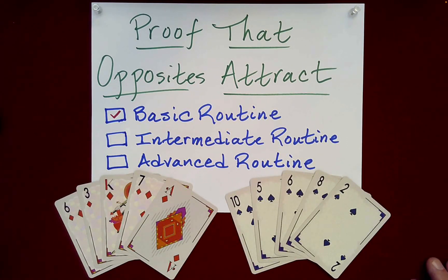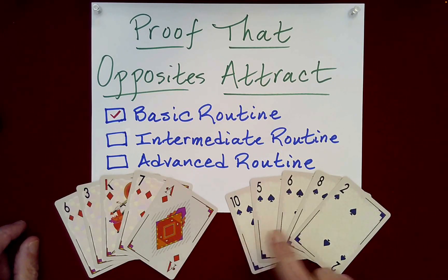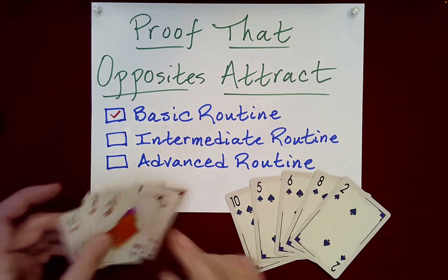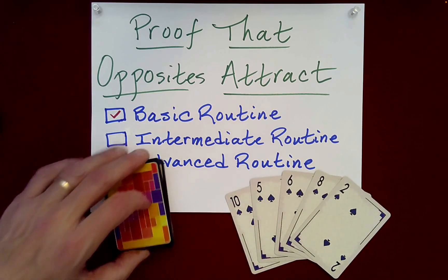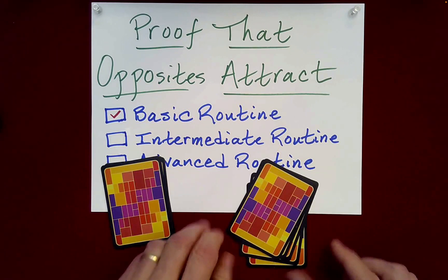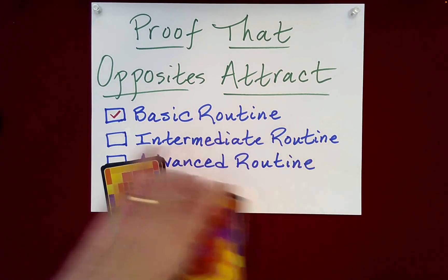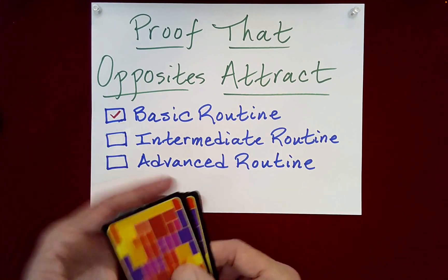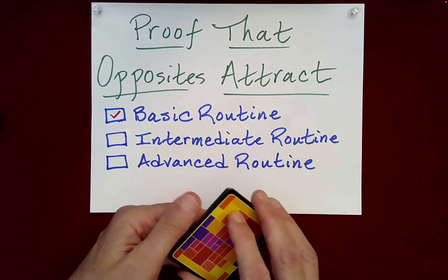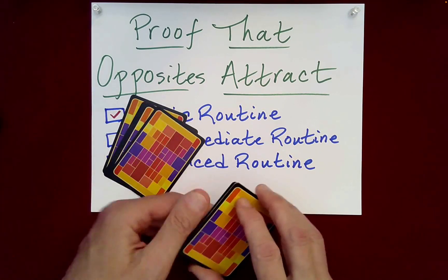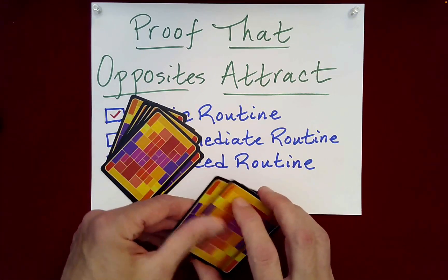For the basic routine, you can begin with any number of red cards and any number of black cards. It's important that you have the same number of each. We just kind of set these down and have the spectator randomly decide how to stack these. From there, we performed a Klondike Shuffle — this is where you take the top and bottom card off as one.